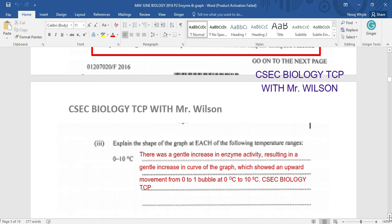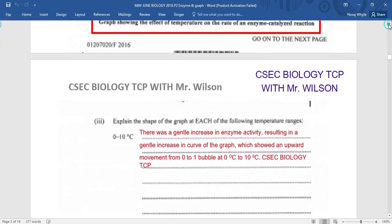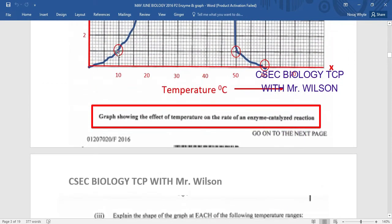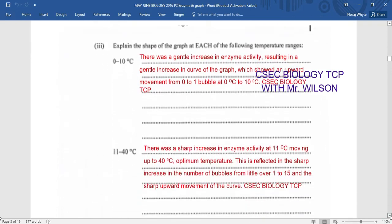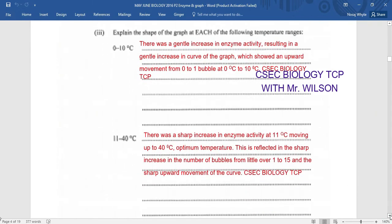So we're expected to explain the shape of the graph at each of the following temperature range. The first temperature range being 0 to 10 degrees Celsius. Now what we figured out here based on the graph is that there was a gentle increase in enzyme activity. And we can see that on the graph here, a gentle increase in the activity we are seeing from here to here. So from 0 to 10, we are thinking that this is a gentle increase. A gentle increase in enzyme activity resulting in a gentle increase in the curve of the graph, showing an upward movement from 0 to 1 bubbles at 0 degrees Celsius to 10 degrees Celsius. This is pretty much a good example of answering this question.